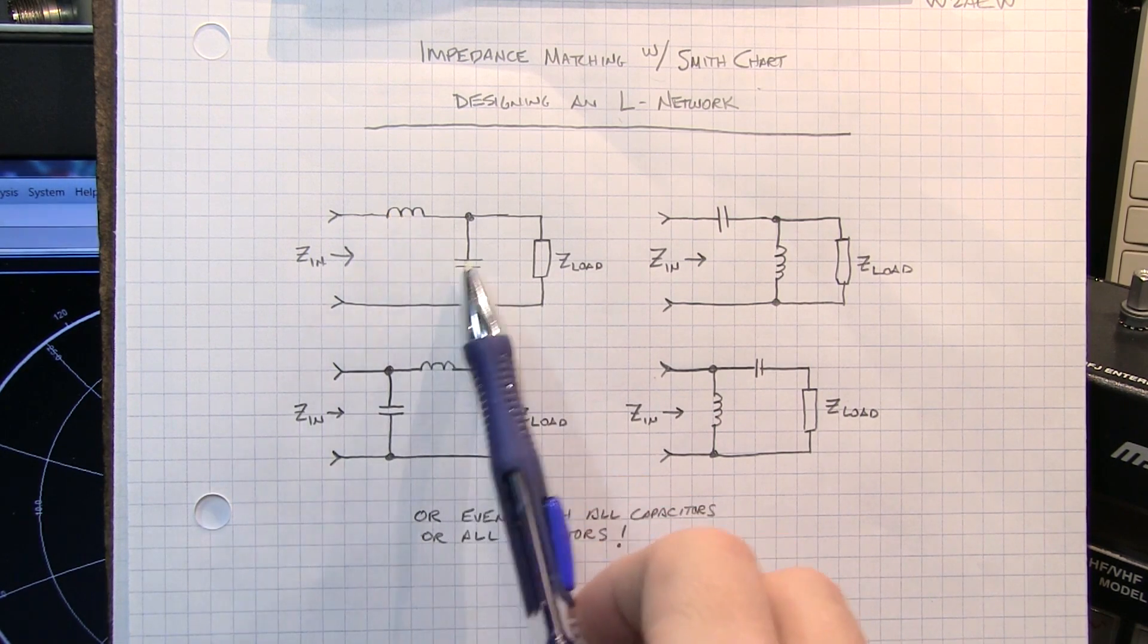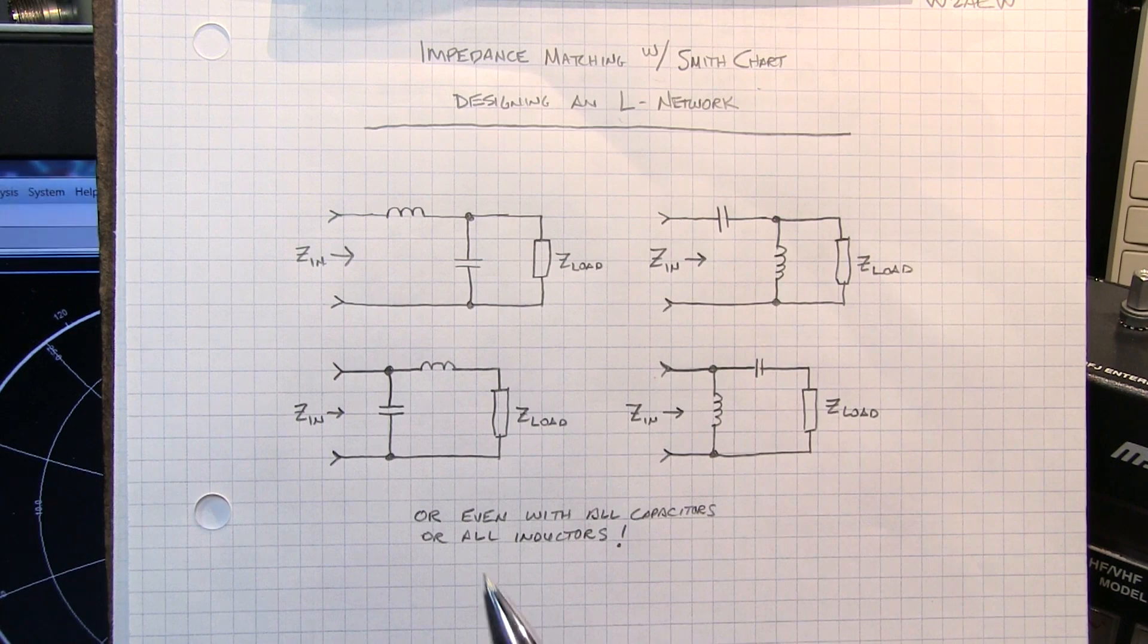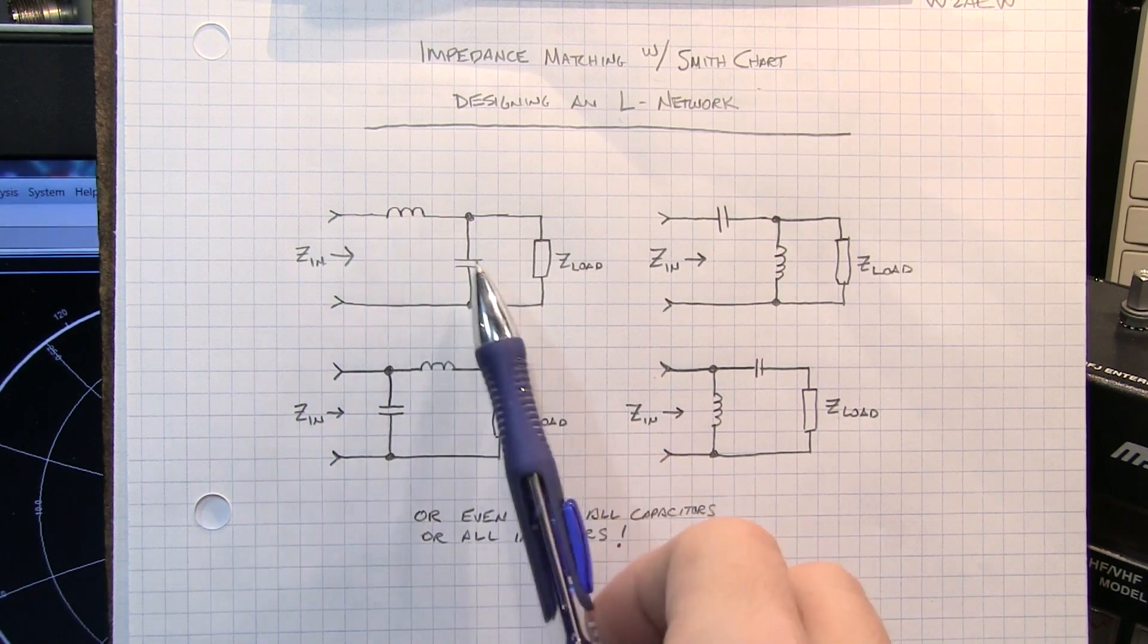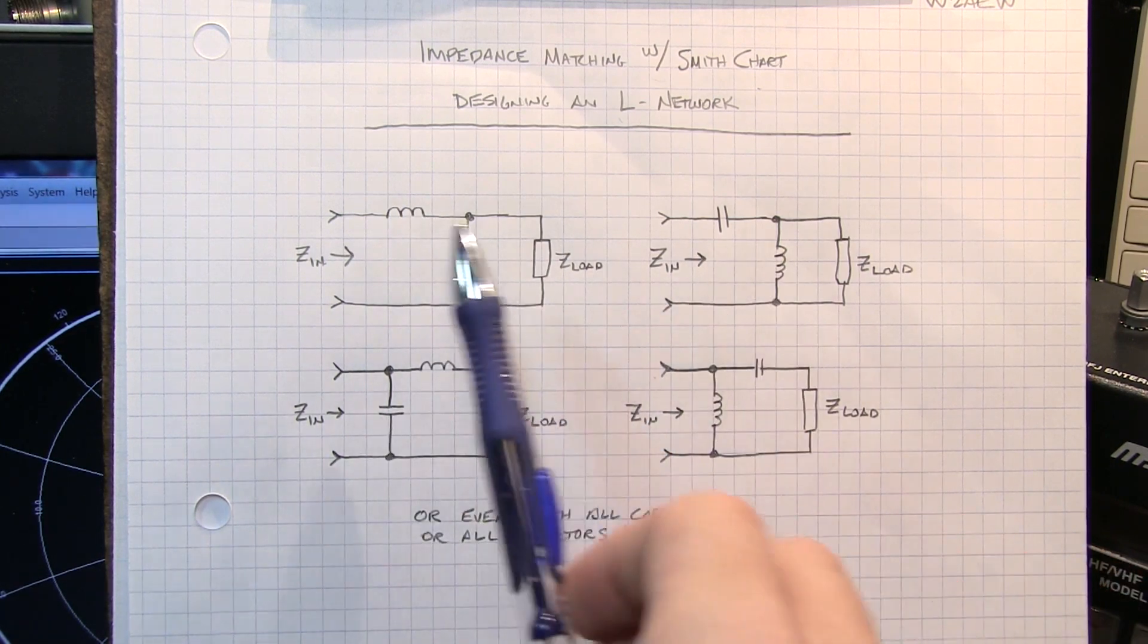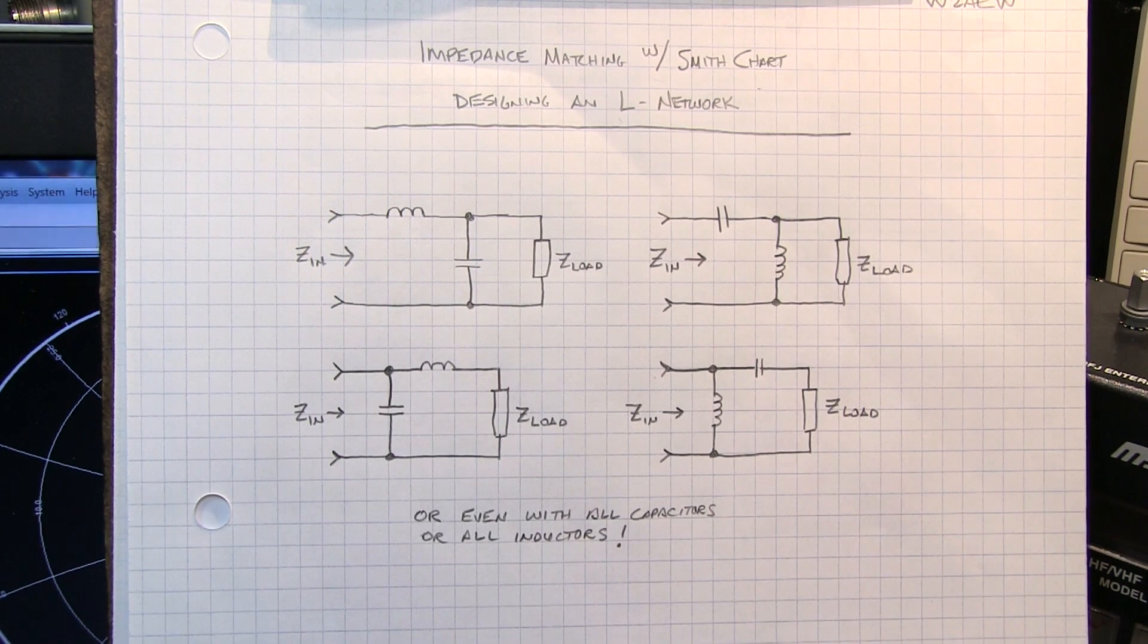I've shown these as LC matching networks, but you really can also build this with two inductors or two capacitors arranged in either direction. So let's go take a look at the approach.